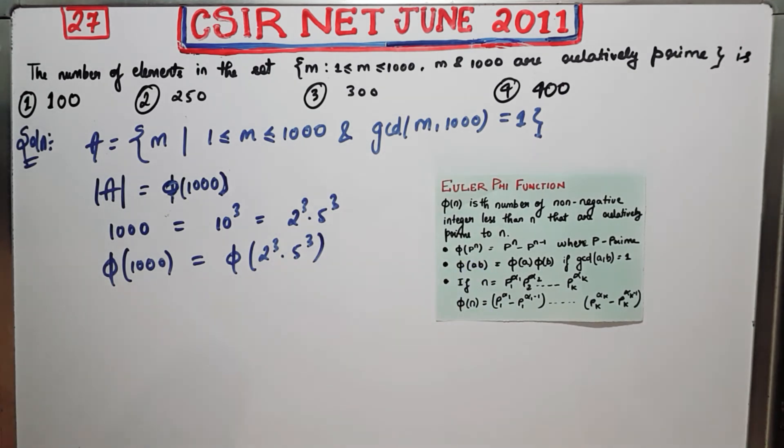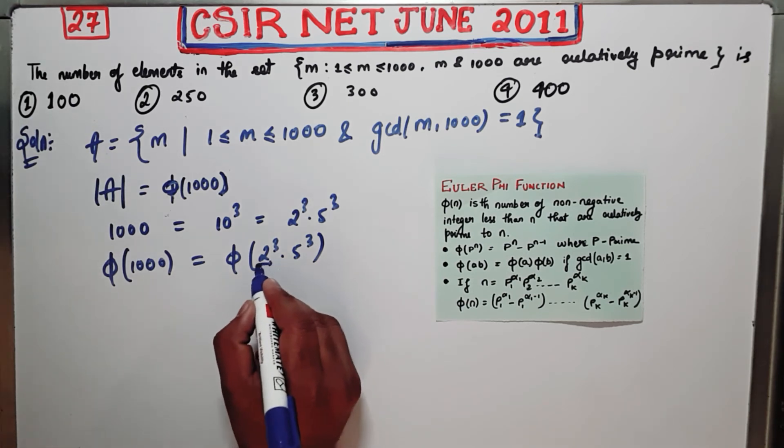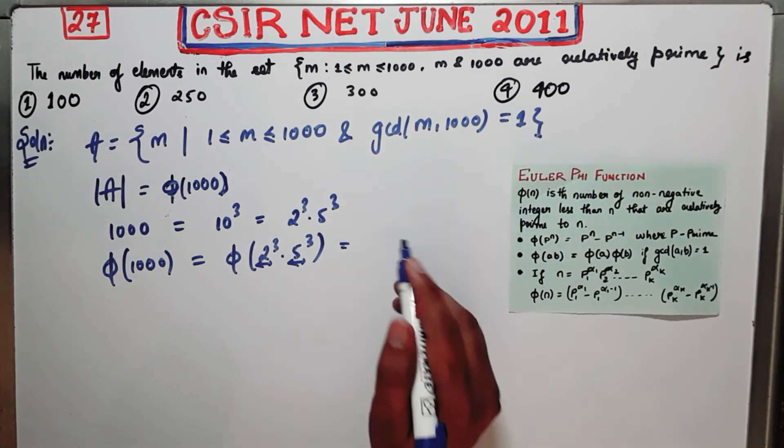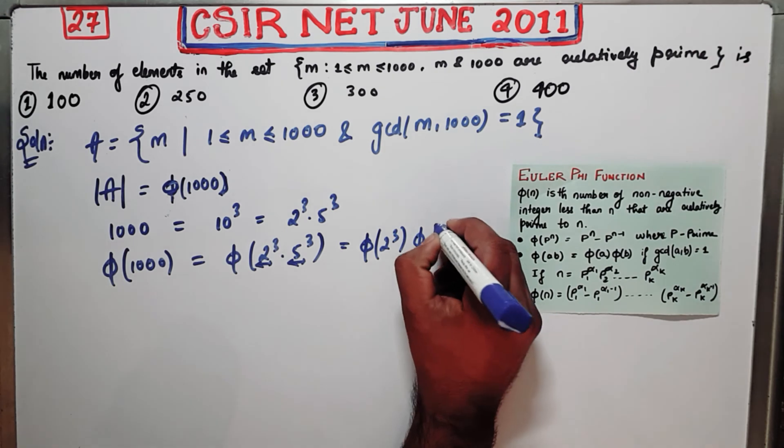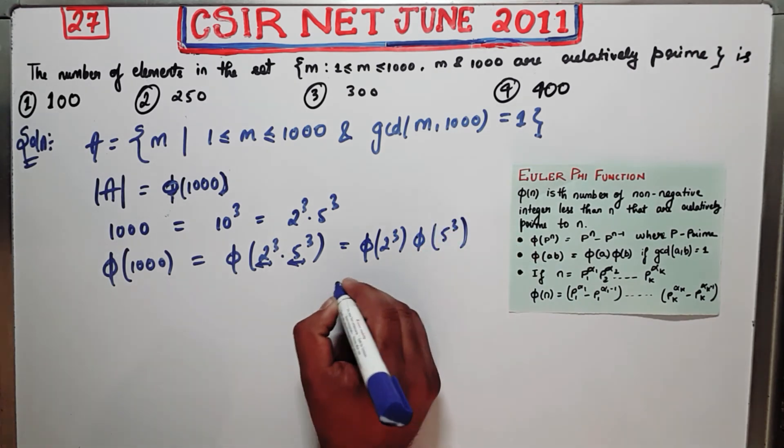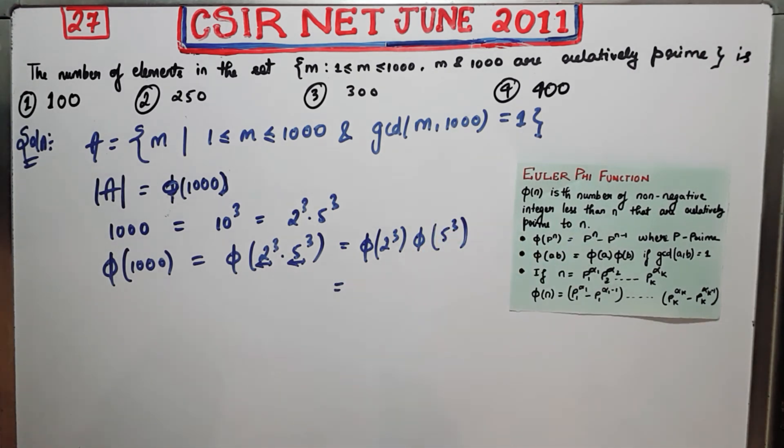Now use this property. It says that phi of ab will be phi a times phi b if GCD of a and b is 1. Now you know the GCD of these two are 1, therefore this will be equal to phi of 2 cube times phi of 5 cube.